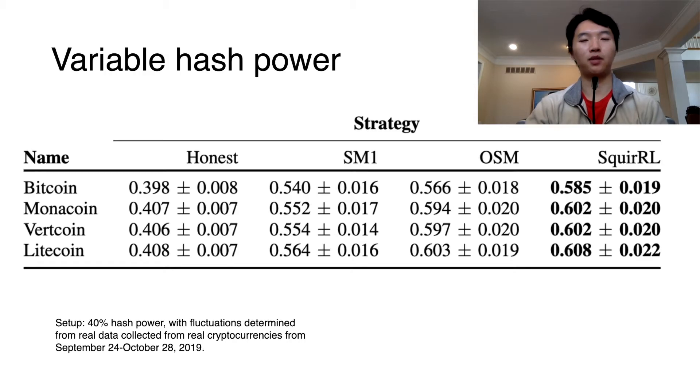First, let's talk about the experimental setup. The Squirrel agent was trained in an environment where its hash power was 40%, with a standard deviation of 10%. The honest and SM1 agents used the fixed strategies as defined in their papers. The OSM strategy was solved by initializing its hash power to 40%. Then, each agent is run in an environment where the hash power fluctuated depending on the fluctuations from real cryptocurrencies, based on data we collected. We see that in a real-world example, Squirrel was able to outperform prior work.